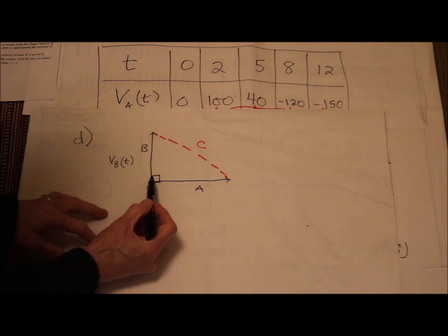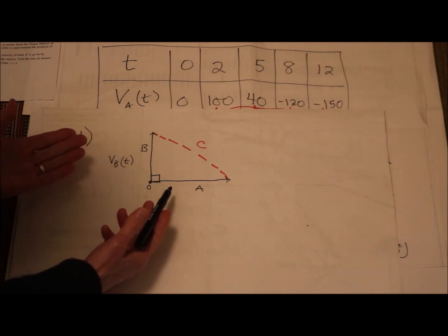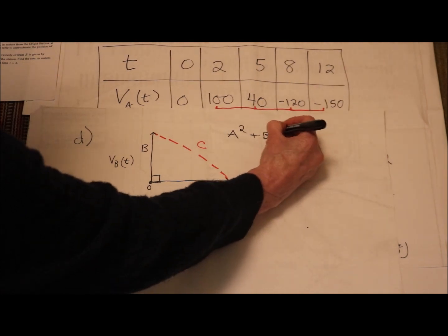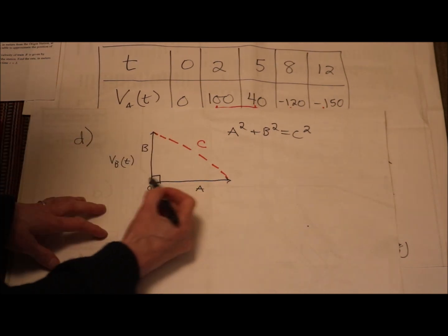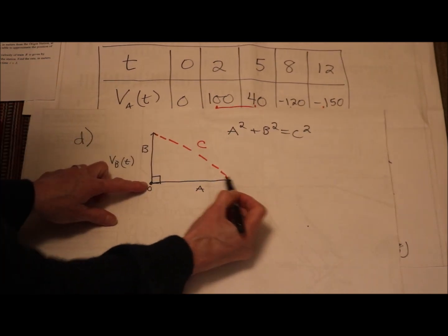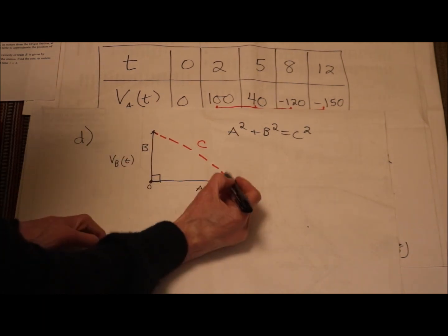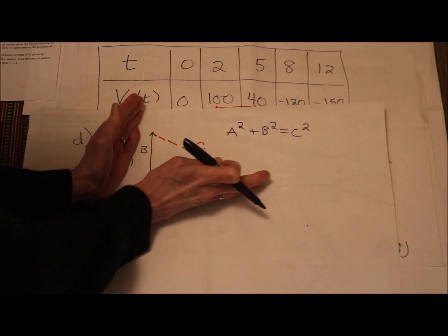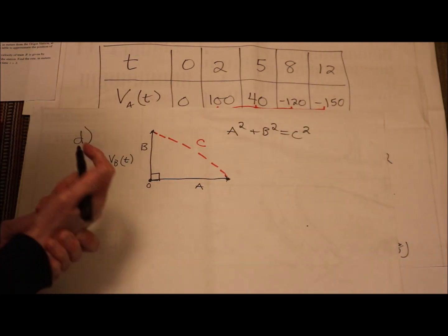Remember with related rates you always want to start with coming up with an equation or a formula that relates all your relevant players. Are you thinking what I'm thinking? I'm thinking Pythagorean theorem. So I have A squared plus B squared equals C squared. That relates all of my relevant variables. A is the distance from the origin to my A train. B is the distance from the origin to where my B train is. And C is the distance between A and B. They're all changing. They're all changing. Right? As my A train goes, my B train goes, C is getting bigger and bigger. Right?